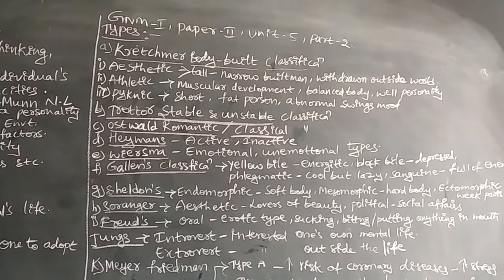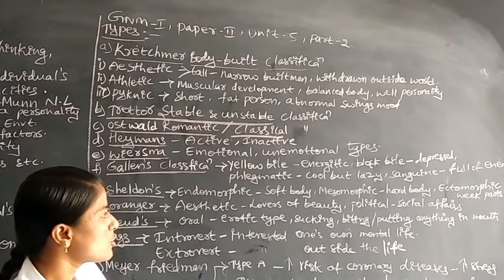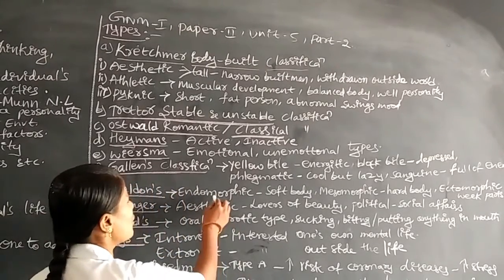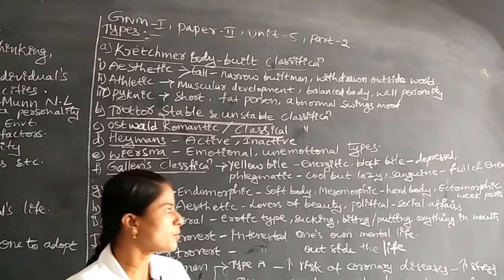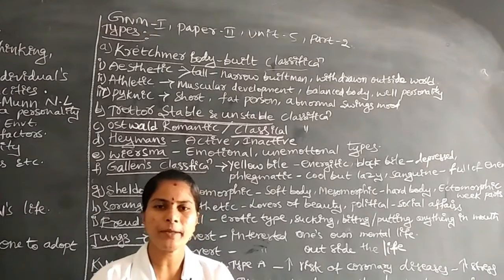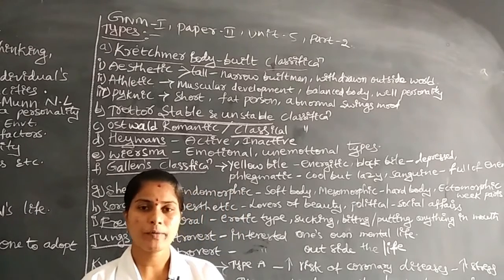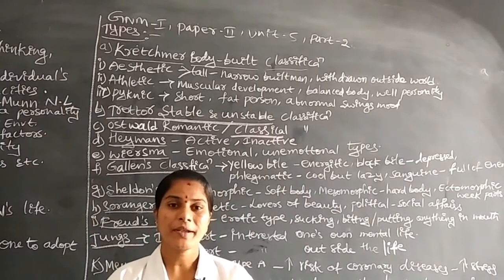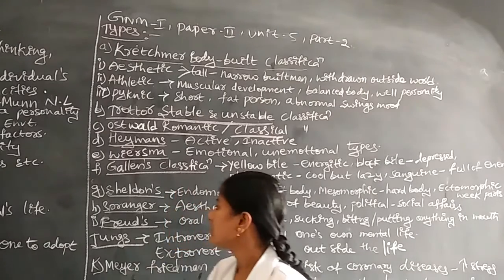Next is Sheldon's classification. There are three types: endomorphic, mesomorphic, and ectomorphic. In endomorphic, individuals have a soft body. In mesomorphic, they have a hard body. In ectomorphic, they have weak body parts. Depending upon the structure of the body, the personality is divided by Sheldon.